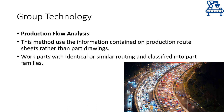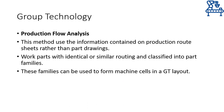The last method — production flow analysis — doesn't rely on design or manufacturing attributes. Instead, it utilizes the information contained in production route sheets, that is the route the part has to take during the complete manufacturing process. Similarity in routing means parts are similar and hence are grouped as a family. This method directly helps in designing machine cells because machines used for processing parts with similar routing are grouped in a cell. Therefore, the group technology layout is a byproduct of this method.